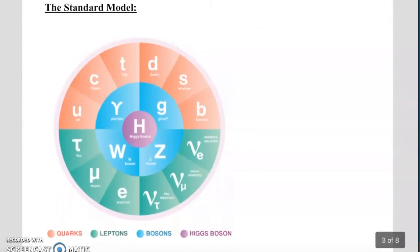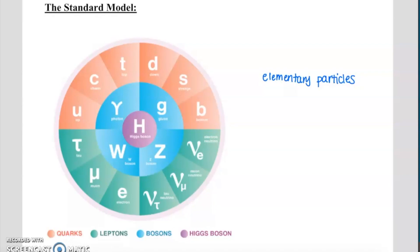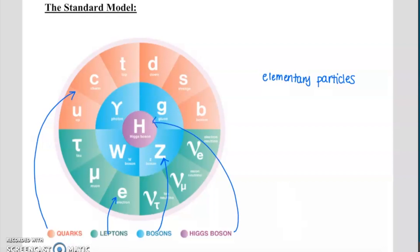Let's start by discussing what we call the standard model. The standard model is a way of organizing all of the elementary particles — the smallest particles we think exist. We have no theory that says there's anything smaller than these. In orange you have the quarks, in green the leptons, in blue the bosons, and in purple the Higgs boson.